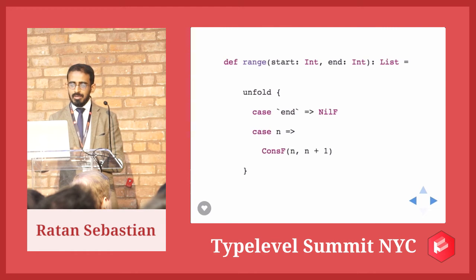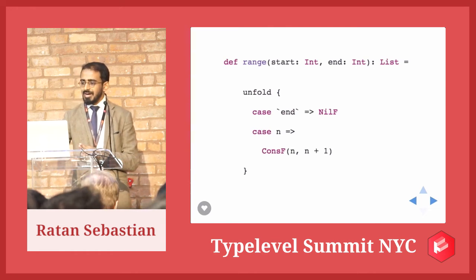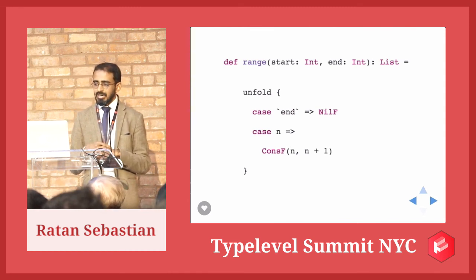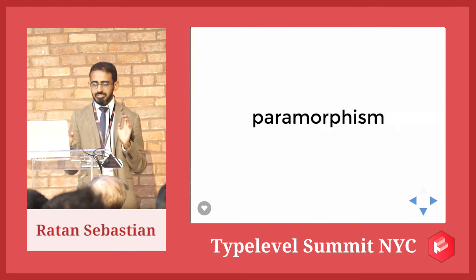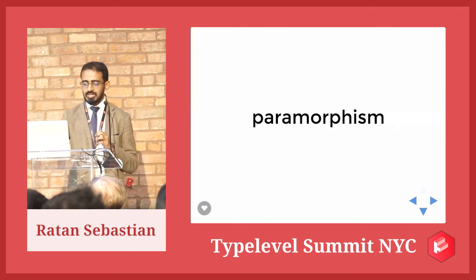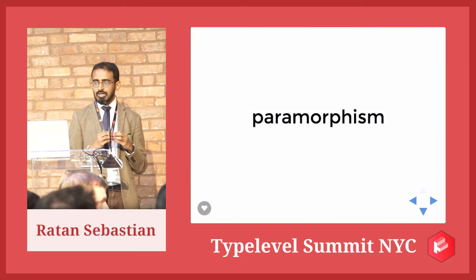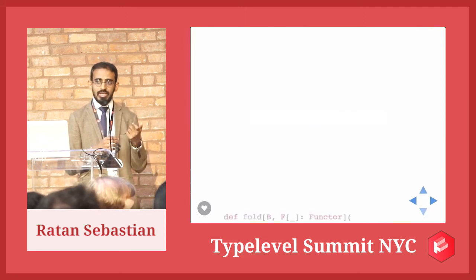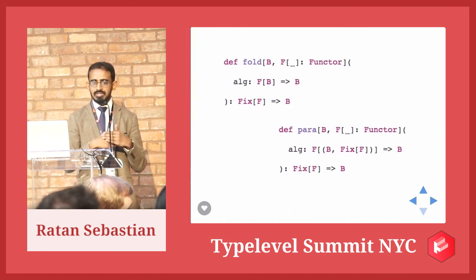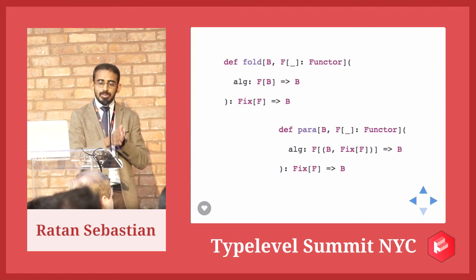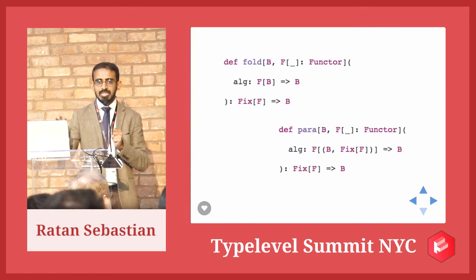Paramorphism — 'para' meaning beside. It's like a catamorphism that adds some structure to the algebra. Let's define it in the same data-structure-agnostic way we did with fold. If a fold algebra takes F of B to B, the algebra for a paramorphism takes both F of B and a Fix F. So at each stage that the algebra is being applied, you have access to the value computed so far at that node as well as the structure that produced that value.